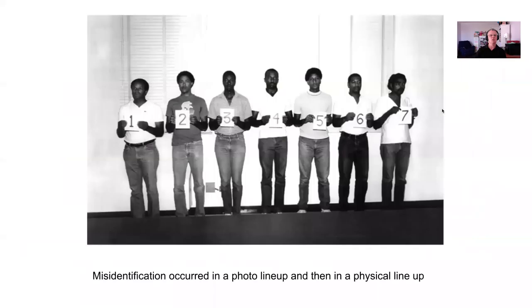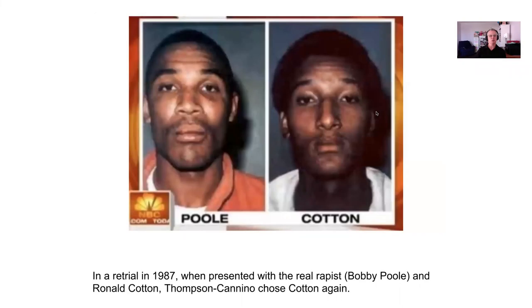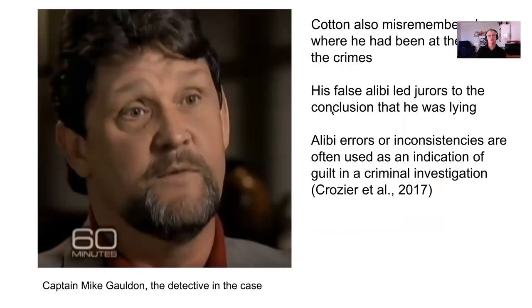In an original in-person line-up, she picked Cotton. And then in a subsequent retrial in 1987, when Bobby Poole was actually brought into the courtroom, she picked Cotton again. So even though the actual rapist was right in front of her, she picked Cotton. This is a demonstration of how choosing a certain person or a certain object can influence people's subsequent memory.